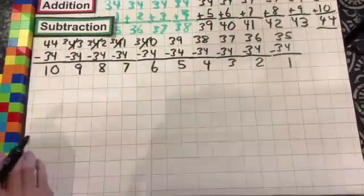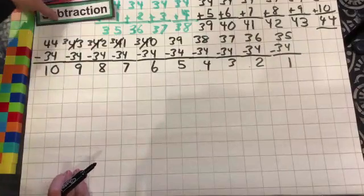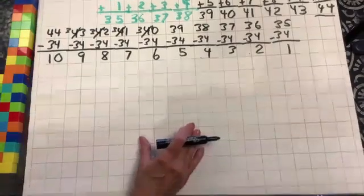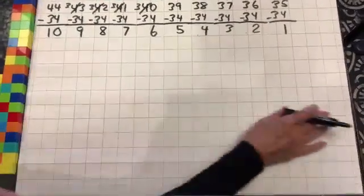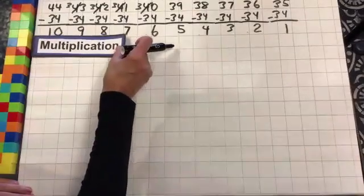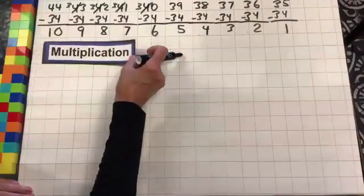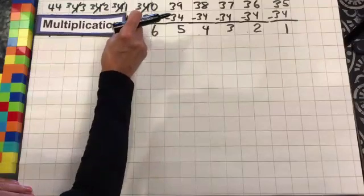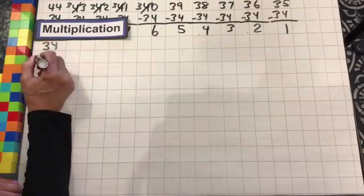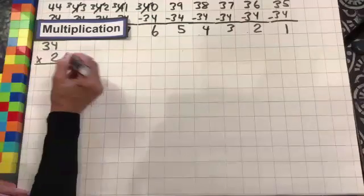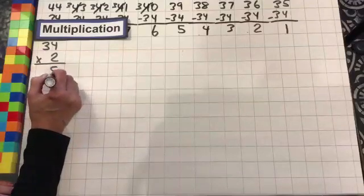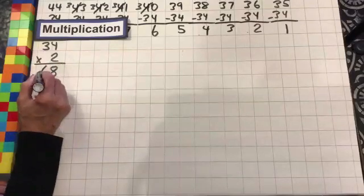All right, we're done with our addition and our subtraction. Hopefully you've got those all written down looking good. And we're going to go on to multiplication. So I'm going to cover this up — hopefully you have that all written down. We're going to do 34 times 2. We're going to start off with 2 because 34 times 1 is 34. 2 times 4 is 8; 2 times 3 is 6.